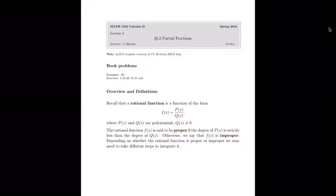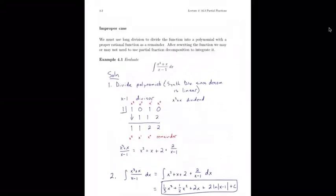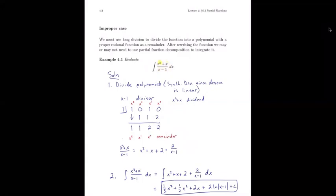Let's look at what to do when we don't have a proper rational function — in other words, when the numerator has a larger degree than the denominator. That's the improper case. Here we have the integral of (x cubed plus x) over (x minus 1) dx. The degree in the numerator is 3 and the degree in the denominator is 1, so the numerator has a larger degree — that's improper.